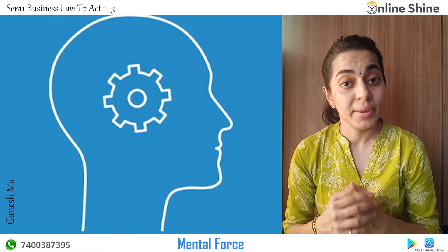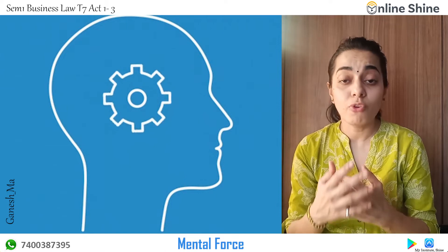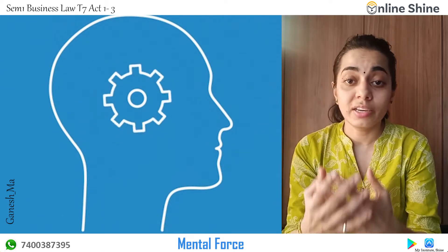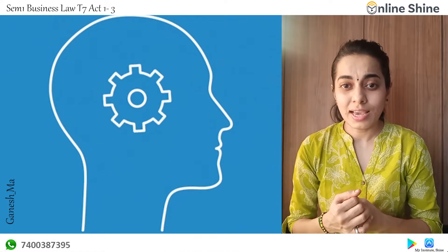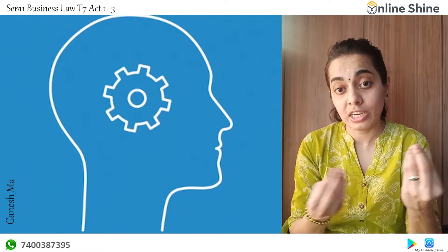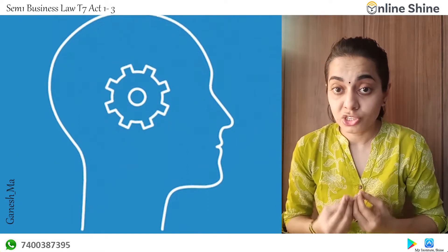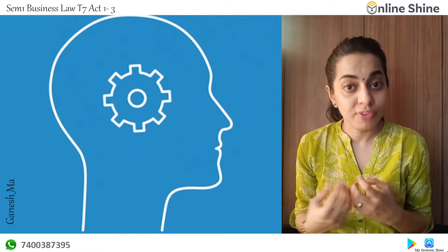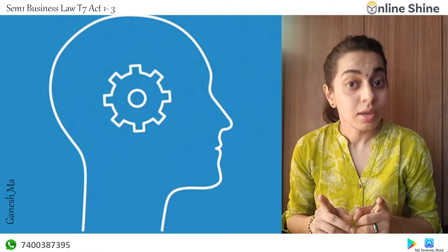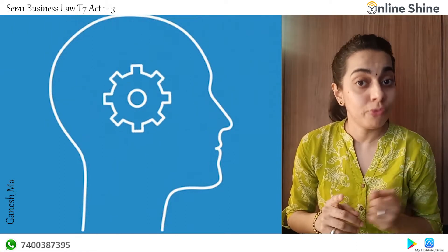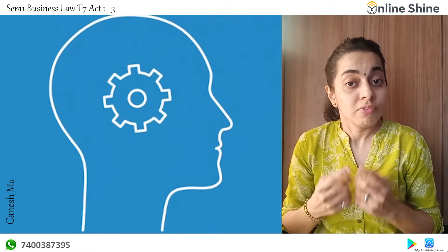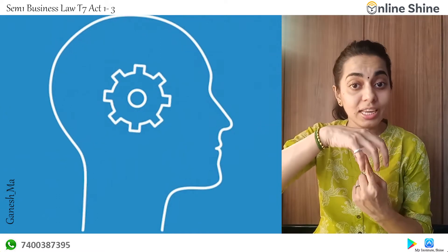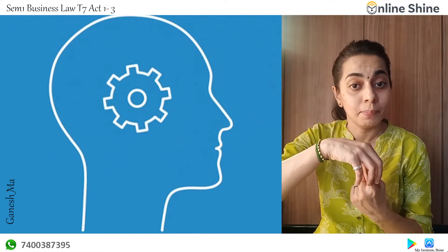The next scenario is undue influence, which can also be called mental force — mentally forcing someone to enter into a contract. Examples include the relationship between a student and a teacher, a doctor and a patient, or a tantric baba and a normal person. These are scenarios where physical force is not present, but there is some other kind of force — a mental force — where a person in a dominating position plays with the other party's mindset.